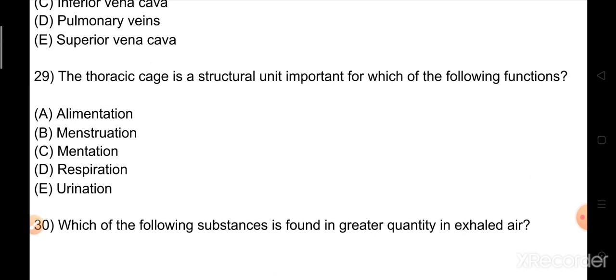Question number 29: The thoracic cage is a structural unit important for which of the following functions? Options: A) elimination, B) menstruation, C) mentation, D) respiration, E) urination. The right answer is option D, respiration. The thoracic cage is where the lungs are situated.